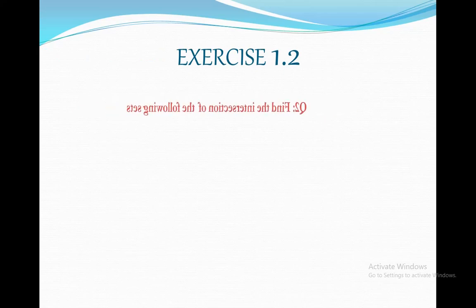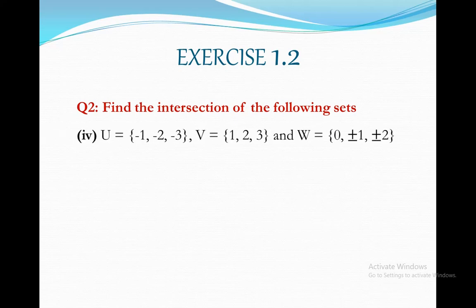Moving to the next, we have part number 4 of the same question. This time we have 3 sets: set U contains elements {-1, -2, -3}, set V contains elements {1, 2, 3}, and set W contains elements {0, ±1, ±2}.